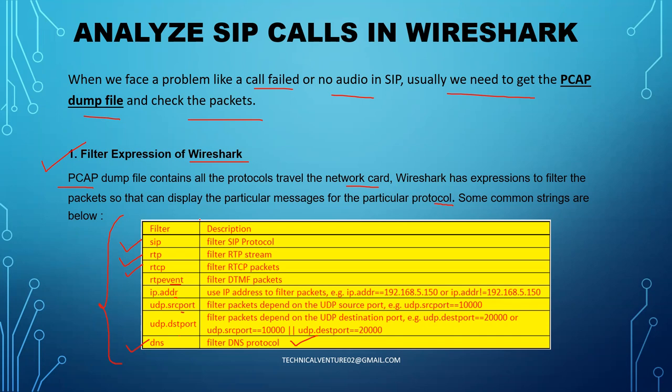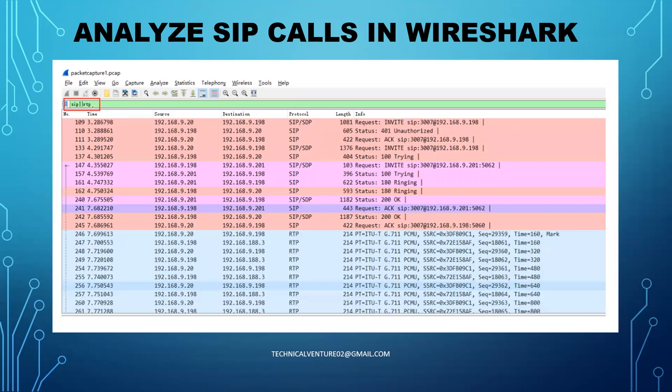Whenever you are capturing a call, you need to open the pcap dump file in Wireshark. Here you can see it will show every detail of that pcap dump file. If you filter with 'sip', it will show the SIP calls. If you filter including 'rtp' as well, then it will show the RTP stream too — I'll show that to you.